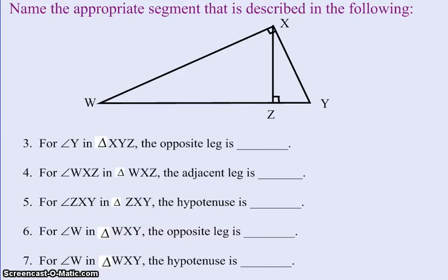This video is called Opposite, Adjacent, and Hypotenuse. In the previous video, you learned how to name sides of right triangles using Opposite, Adjacent, and Hypotenuse. This video is designed just to give you a little more practice so you can get used to using this new vocabulary.